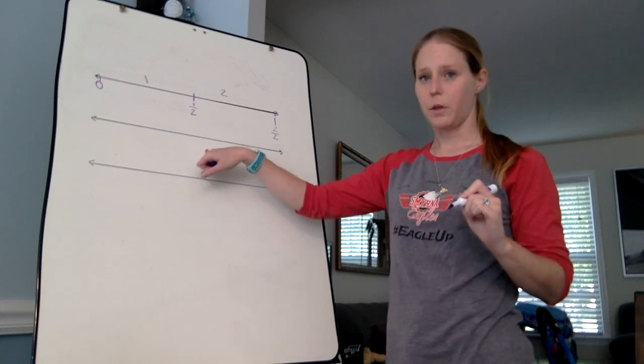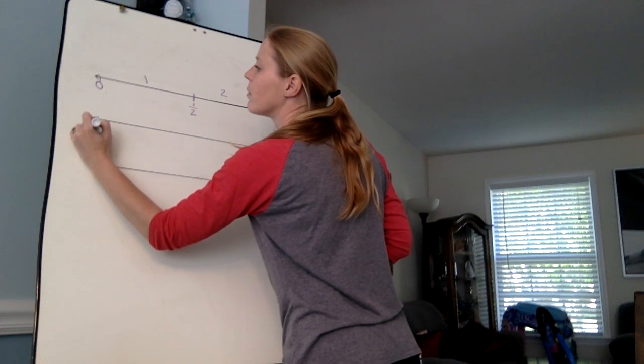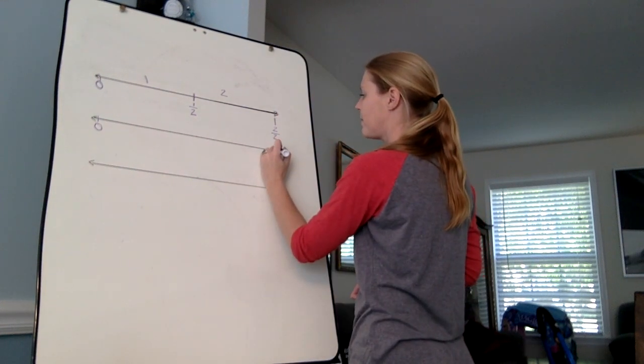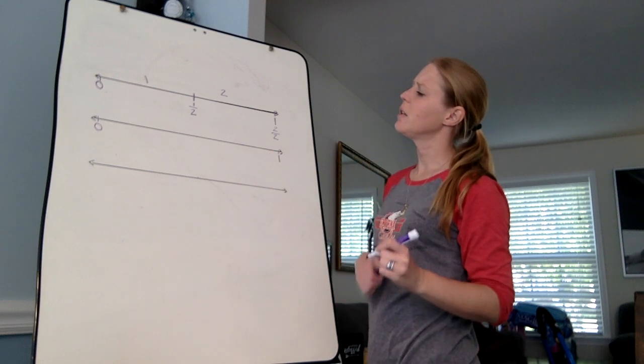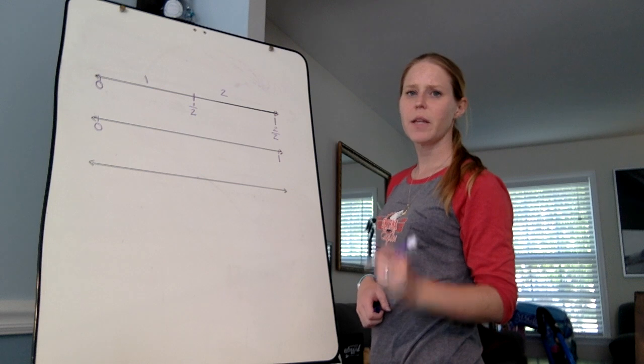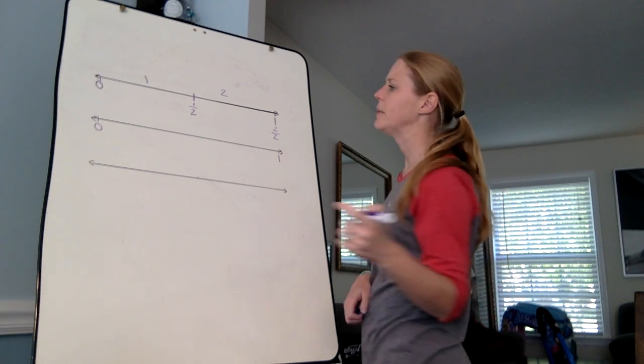This one I want to break up into fourths. So again, I'm going to label my zero, I'm going to label my one, and when I do fourths I like to start in the middle. I like to find that halfway point, but I know I have to have four equal size pieces, so here's how I do it.